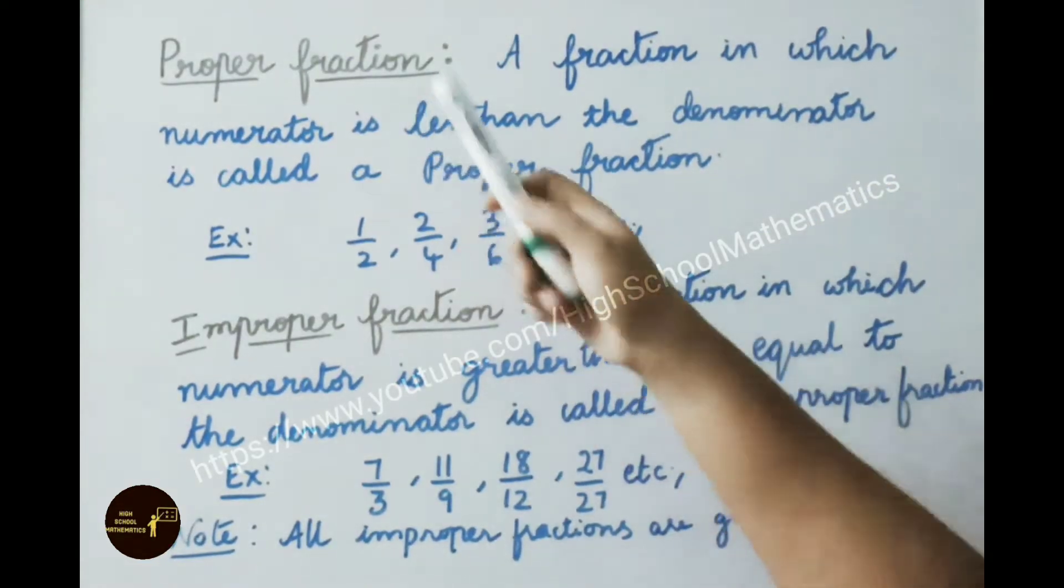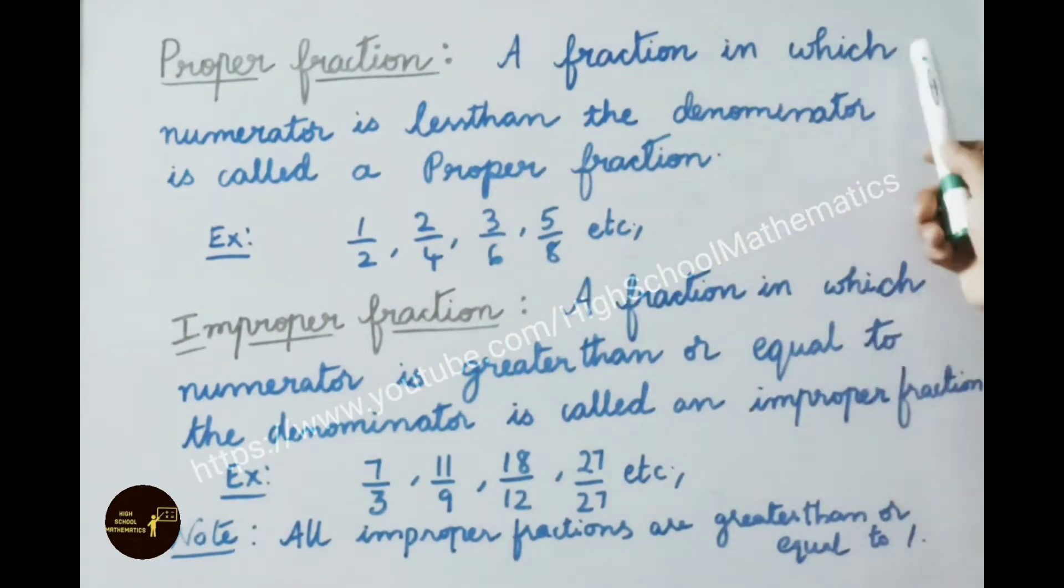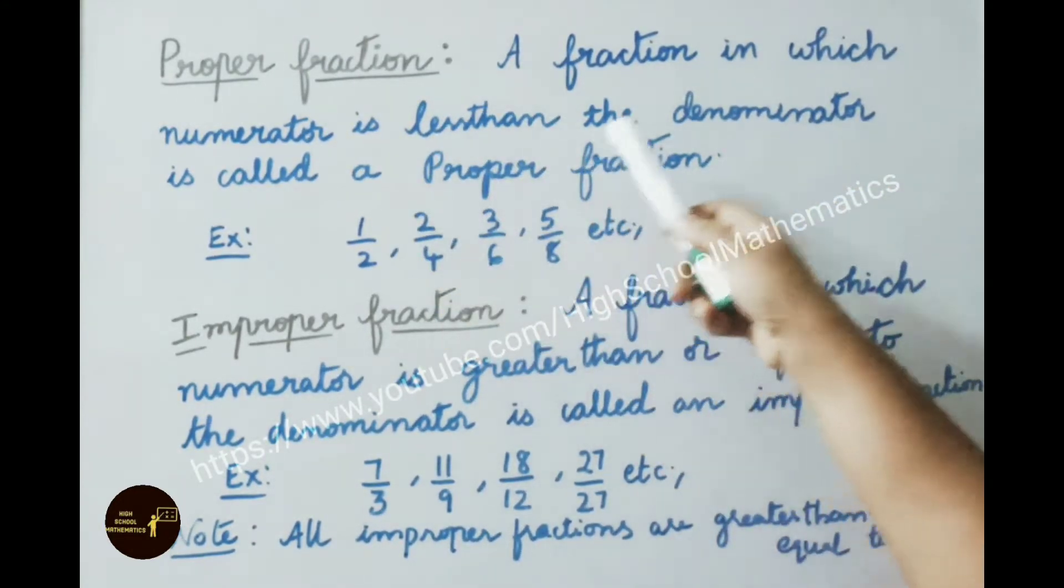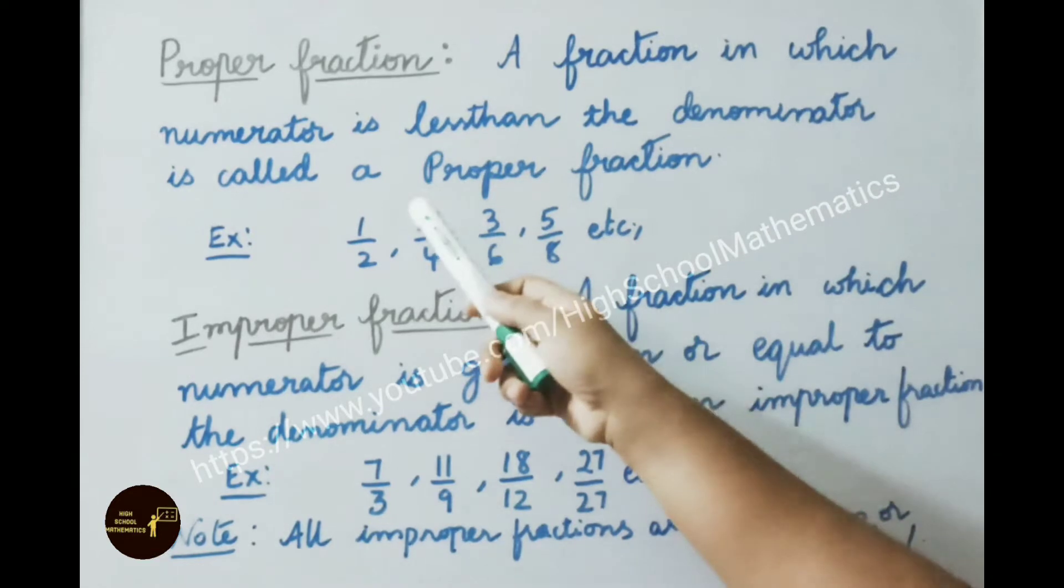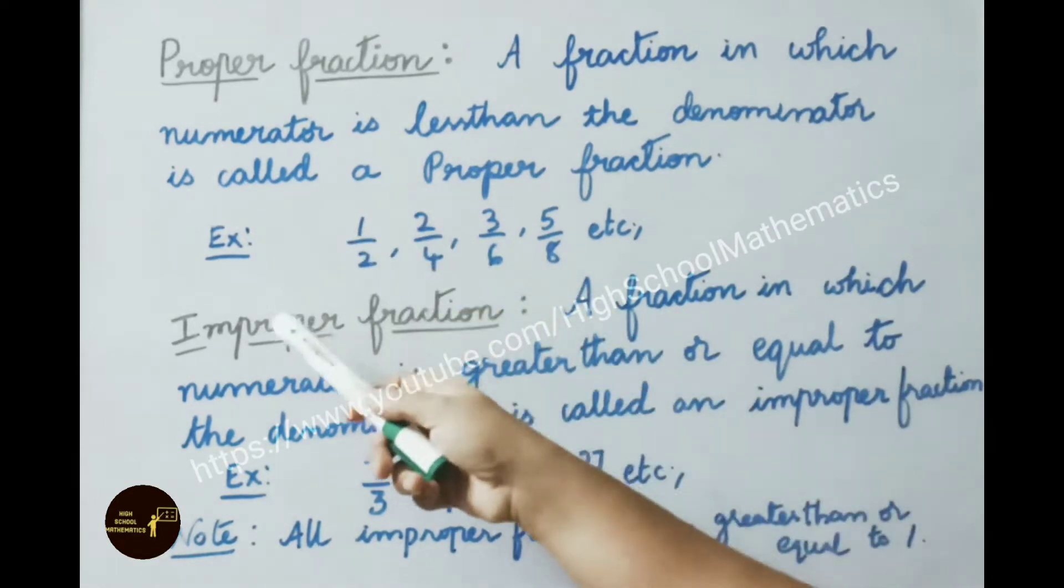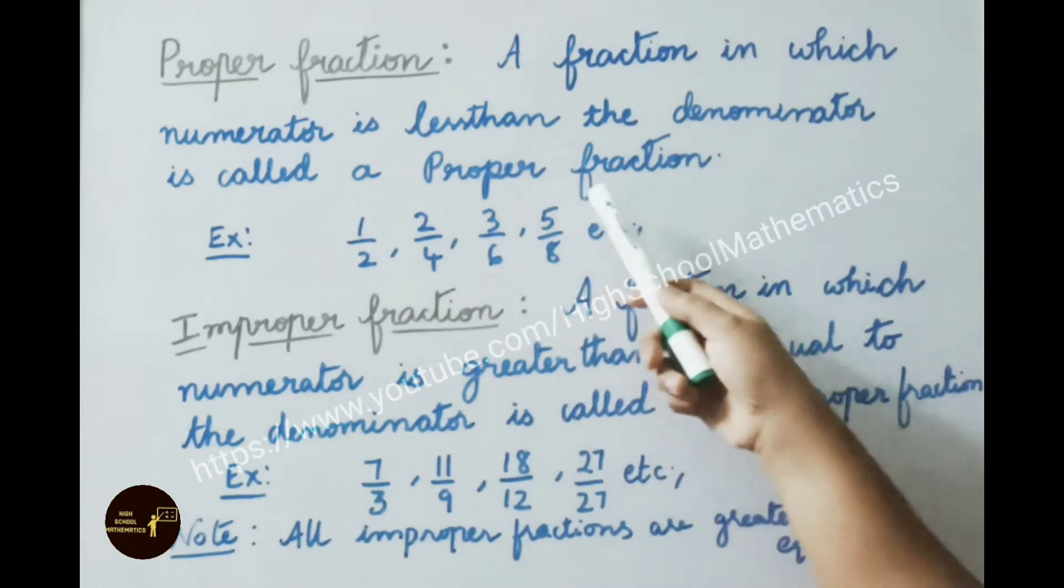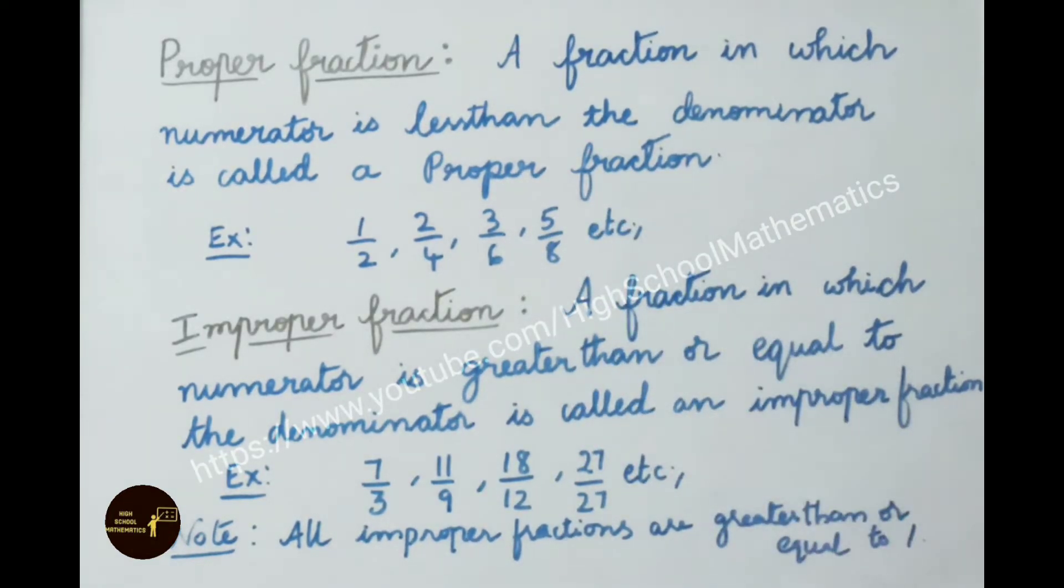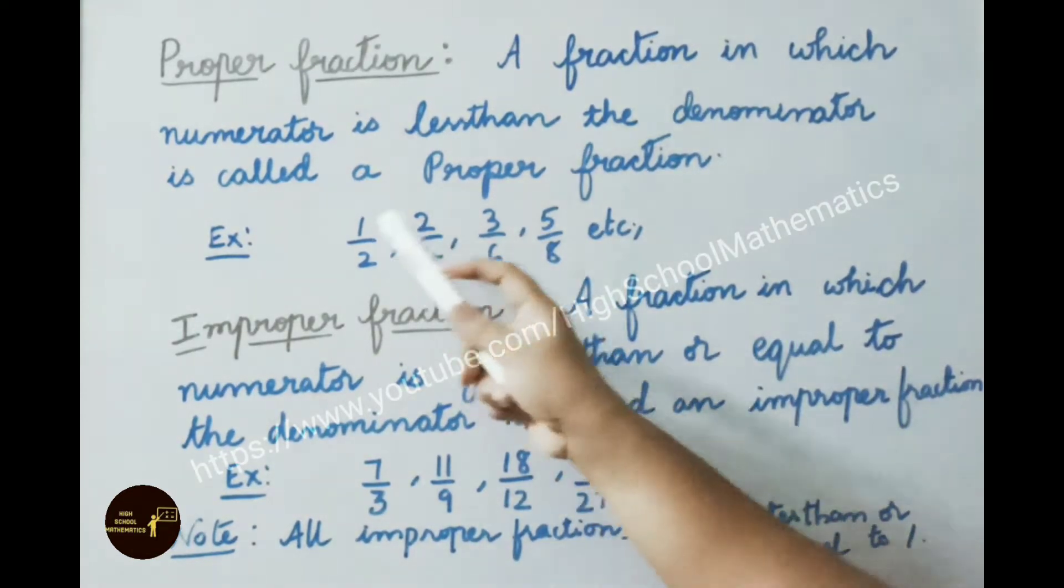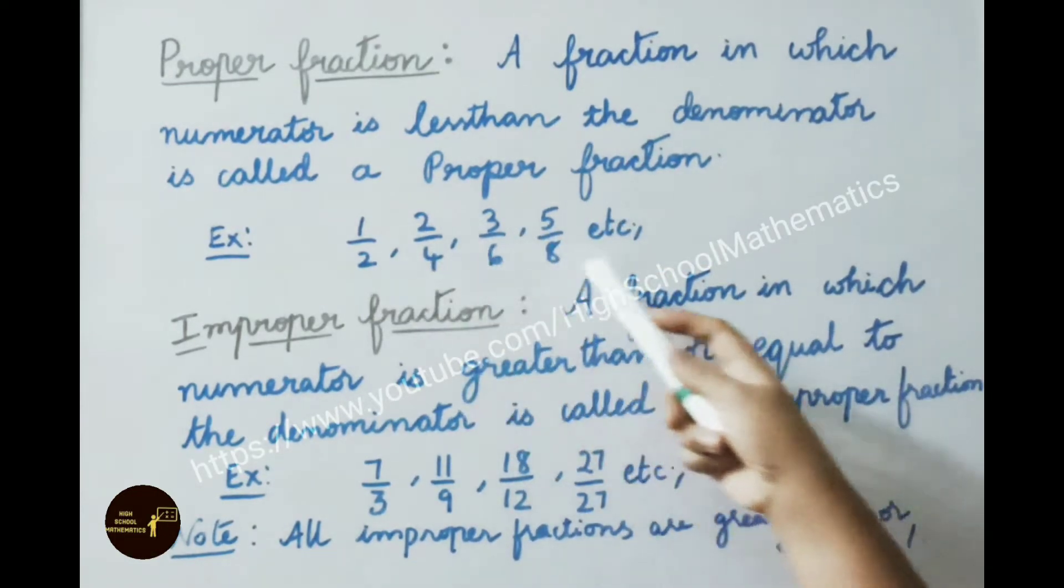See now what is proper fraction? A fraction in which numerator is less than the denominator is called a proper fraction. See example: 1 by 2, 2 by 4, 3 by 6, 5 by 8 etc. In all these examples, numerators are less than the denominator.